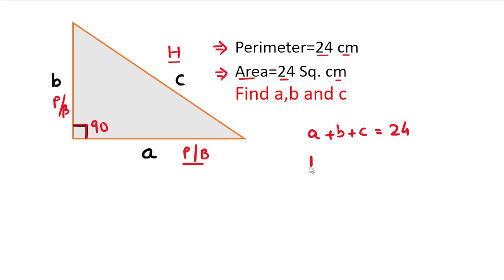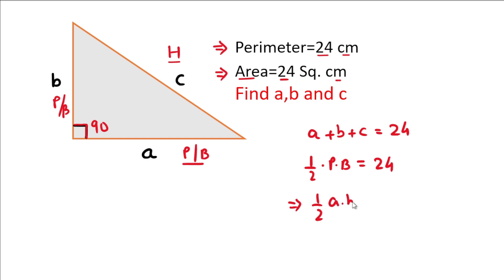The area of a right angle triangle is half multiplied by perpendicular multiplied by base, which equals 24 square centimeters. So half times a times b equals 24, which gives us a times b equals 48.